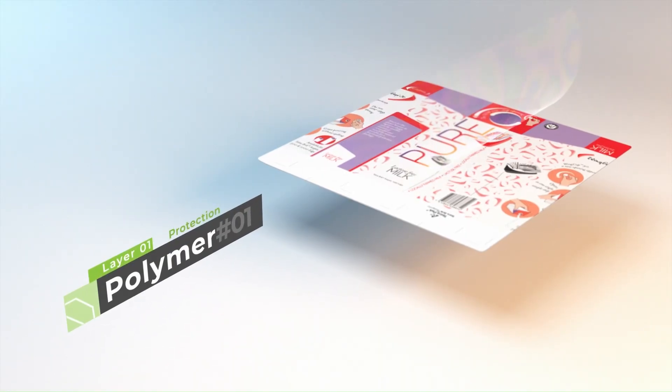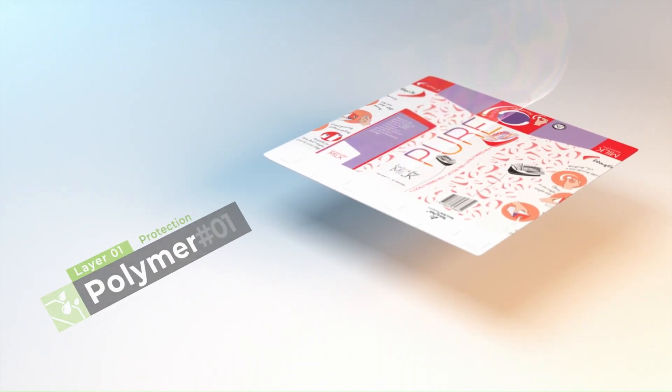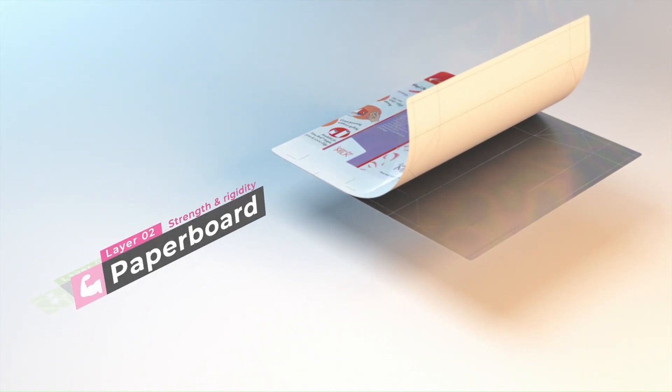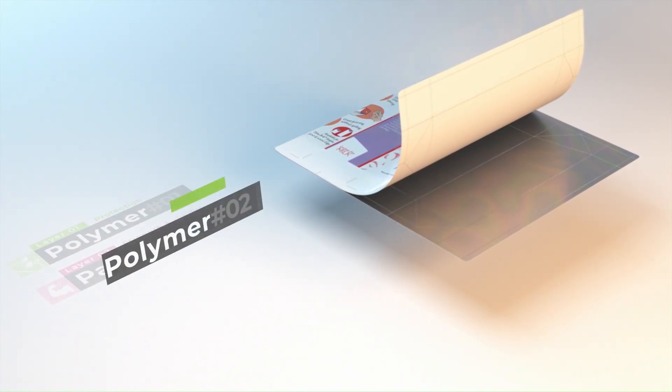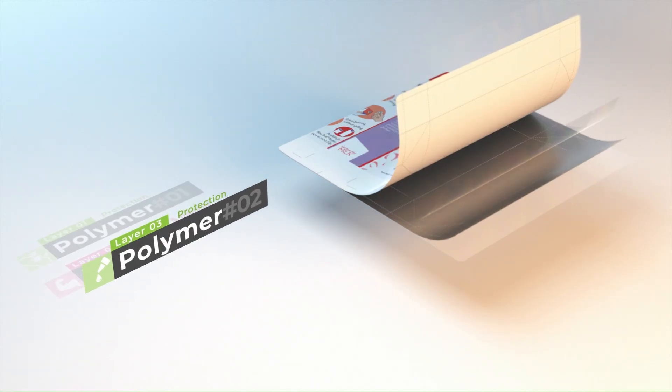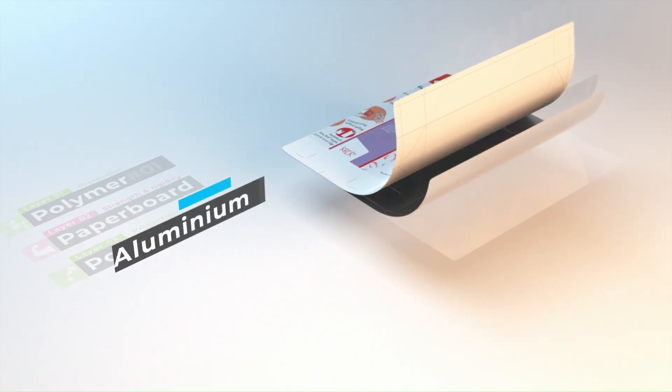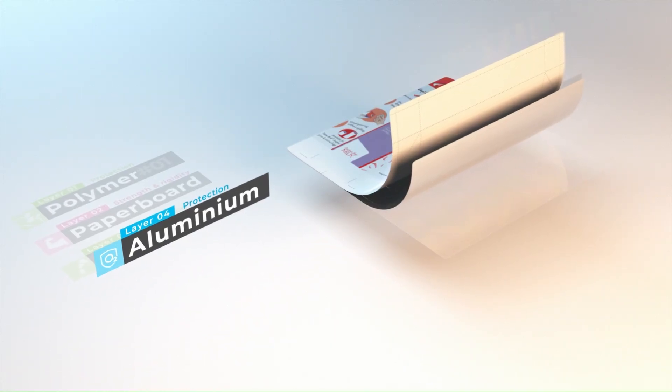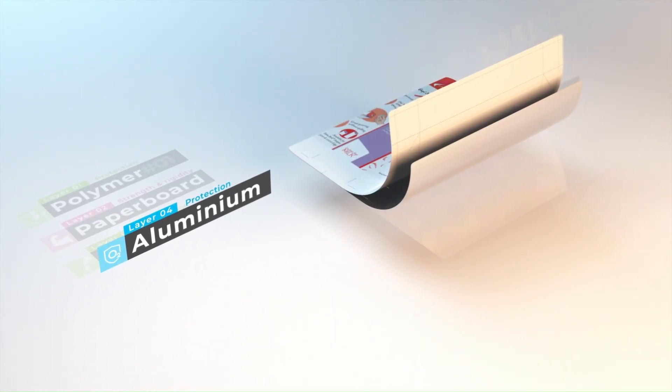The outermost layer of polymer protects the package from moisture. The paperboard gives it strength and rigidity. In our aseptic packages, a second layer of polymer glues the paper to the foil, which in turn acts as a barrier against light and oxygen and enables induction sealing.